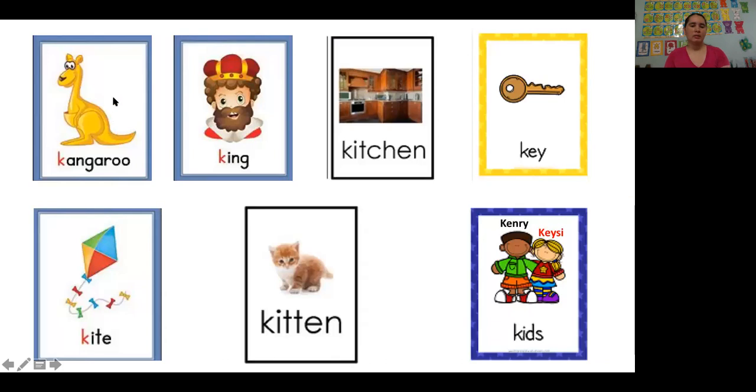Now let us practice some vocabulary words. We got here K for kangaroo. We got here king, kitchen, key, kite, kitten, kids. And we have here two proper names that write with the uppercase K, this is Kenny and Casey. Let us practice again. Kangaroo, king, kitchen, key, kite, kitten, kids. And two proper names that write with the uppercase K is Kenny and Casey.